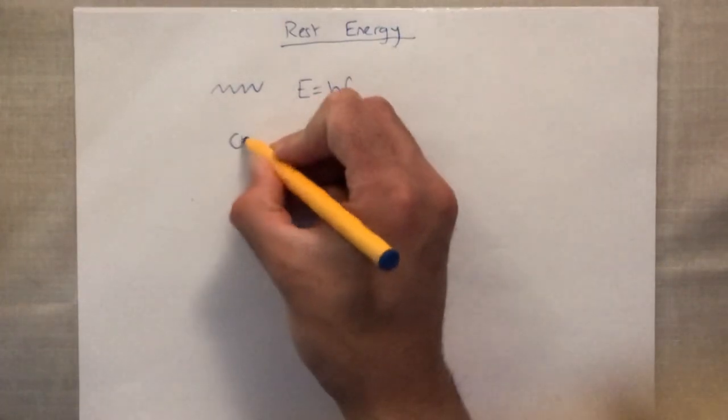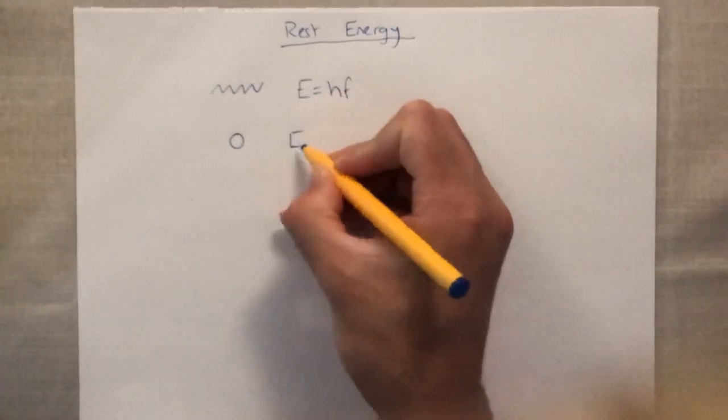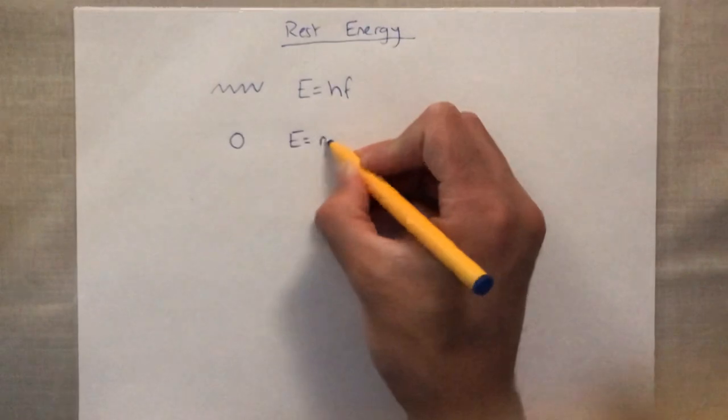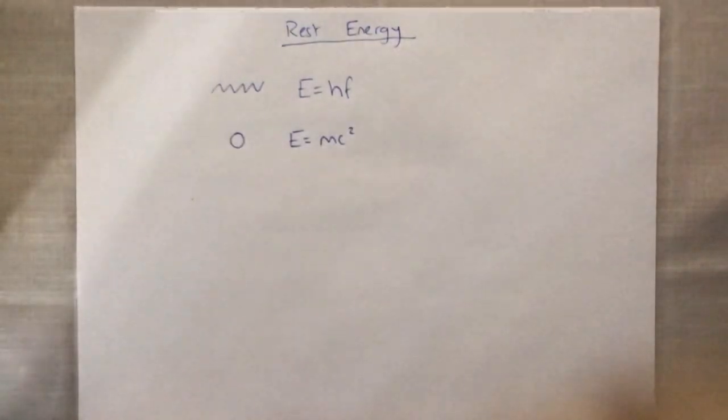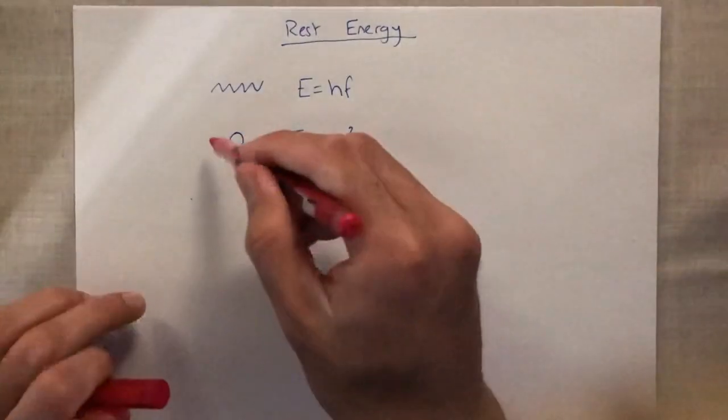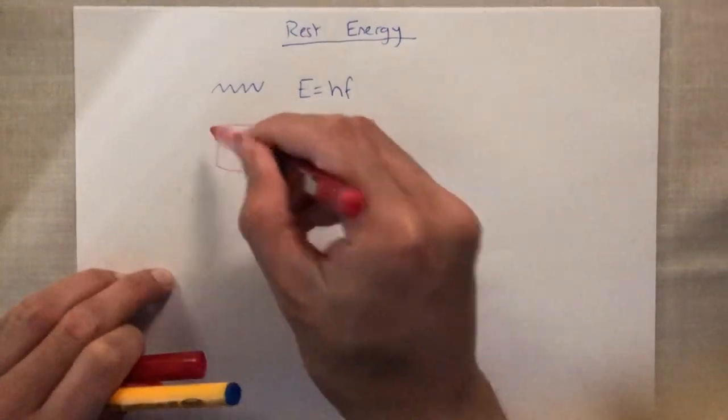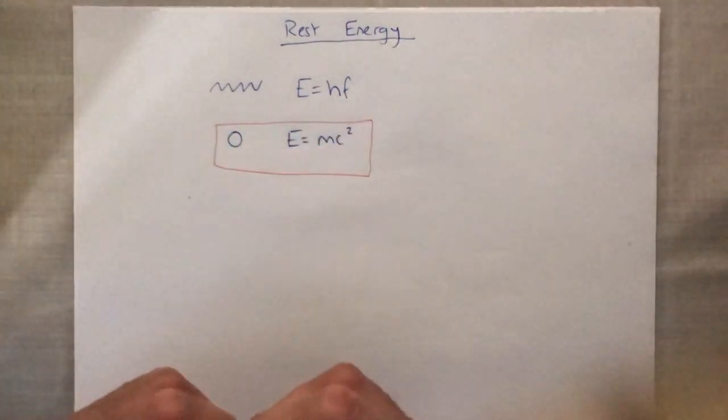However, for any particle out there, we use E is equal to mc squared. And this here is what we're going to be using to calculate the different rest energies of different particles.